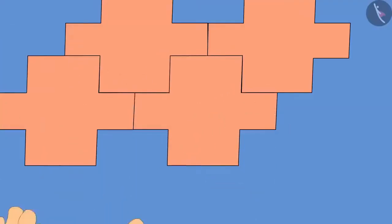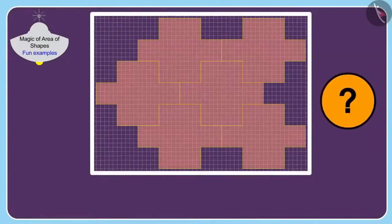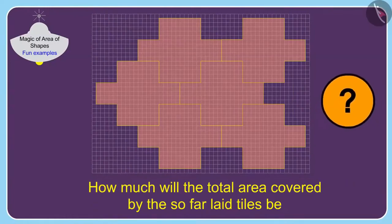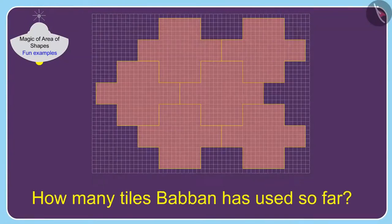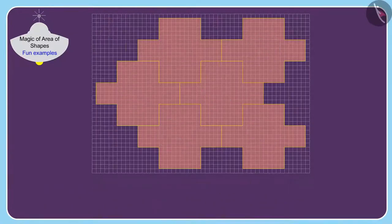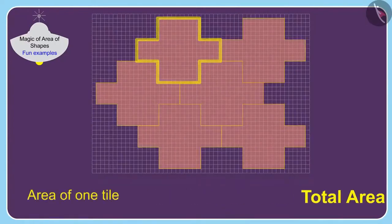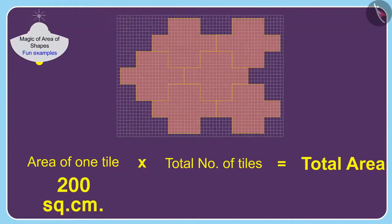After putting some tiles, Babban fell asleep. If Babban has so far laid tiles in this way, can you tell how much will the total area covered by the tiles be? Let us first find out how many tiles Babban has used so far — he has used six tiles. To find the total area, we only have to multiply the area of one tile by the total number of tiles. The total area covered by the tiles will be 200 multiplied by 6, which is 1200 square centimeters.